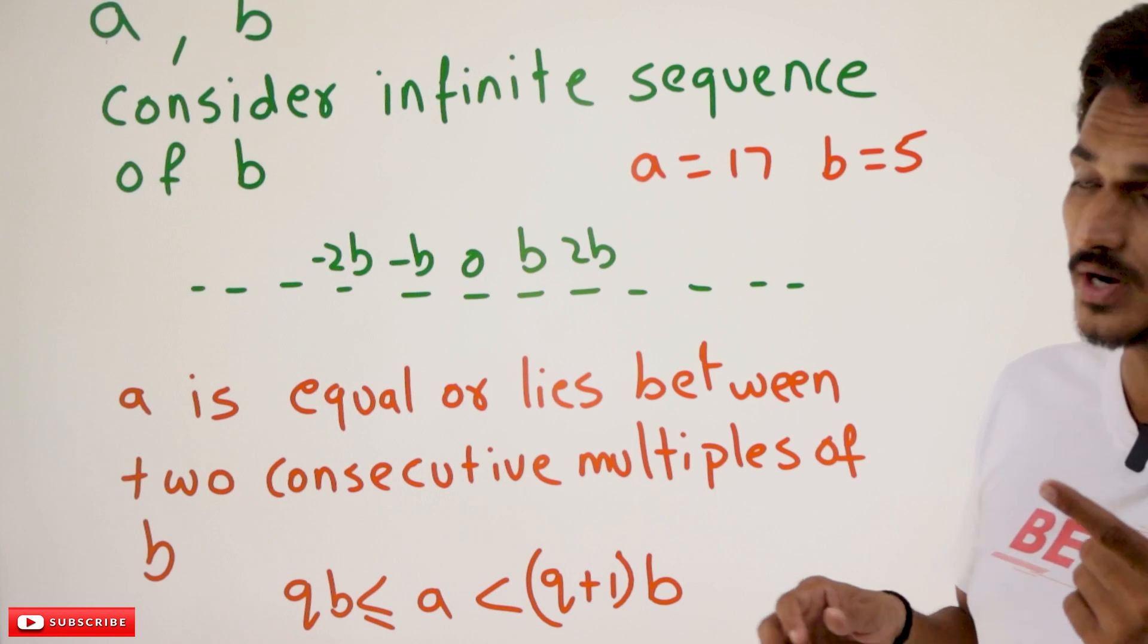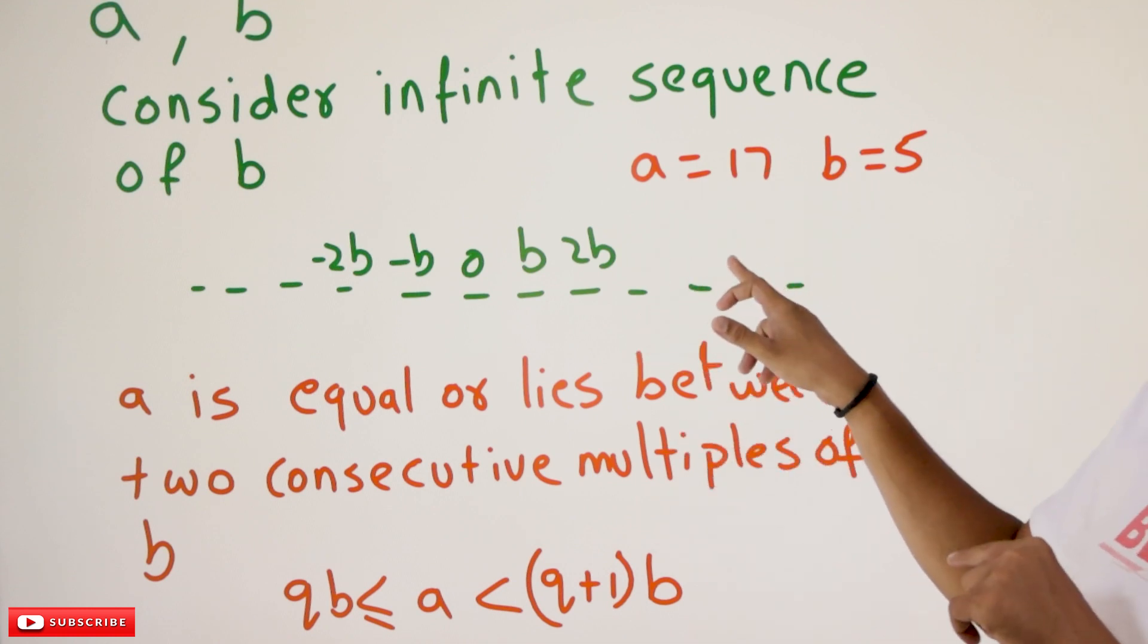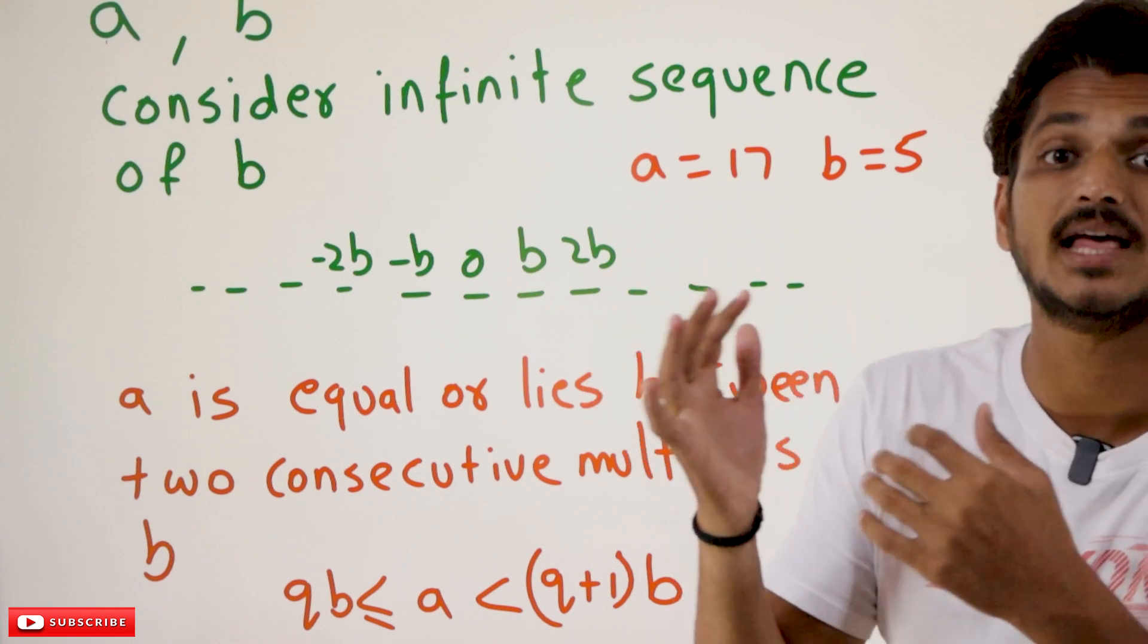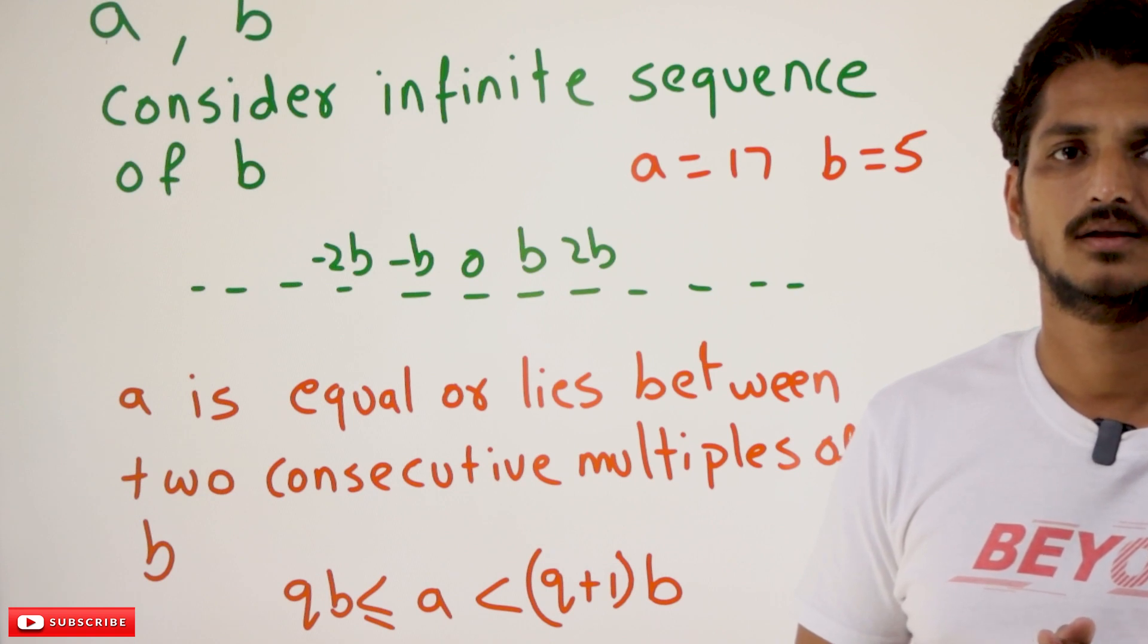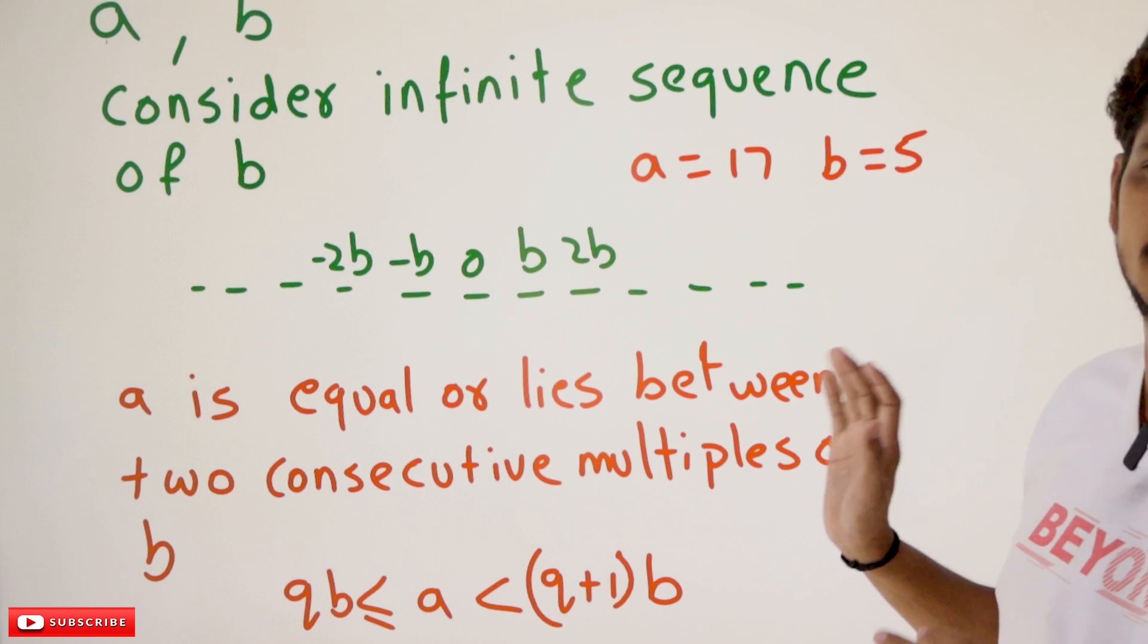And one more point you need to understand. See, A lies between 3B and 4B. So the remainder value is definitely less than B. This is the point you need to understand.